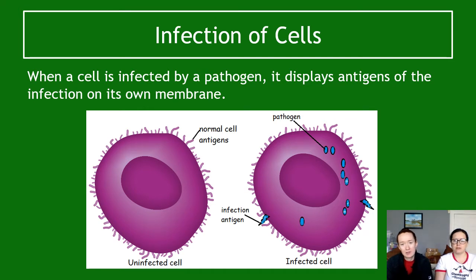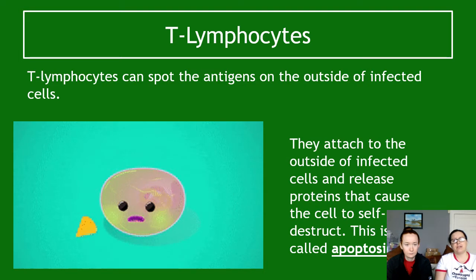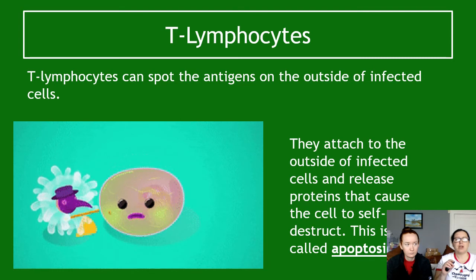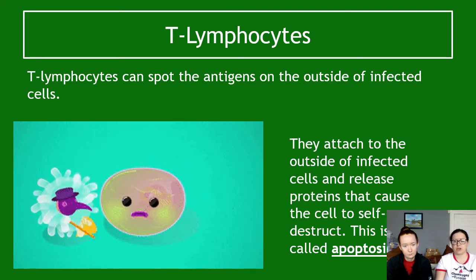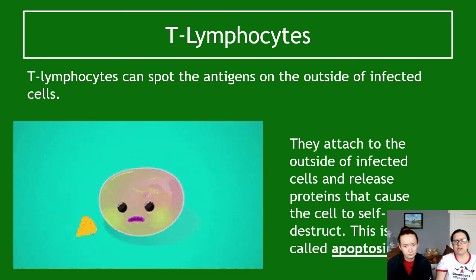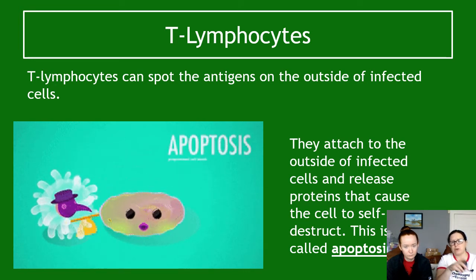When a cell is infected by a pathogen, it can display antigens of the infection on its own membrane — the infected cell shows both normal cell antigens and infected antigens, with the pathogen now inside. T lymphocytes can spot these antigens on the outside of infected cells, attach to the infected cell, and release proteins that cause the cell to self-destruct. This self-destruction is called apoptosis.